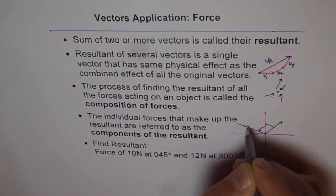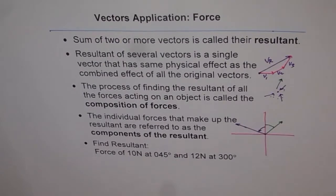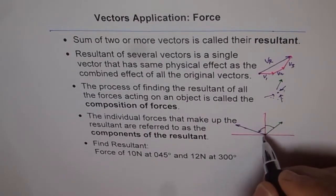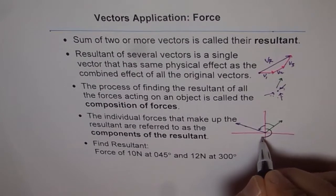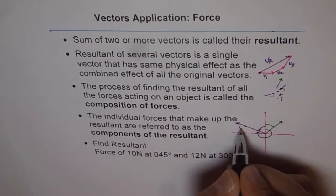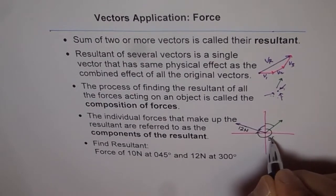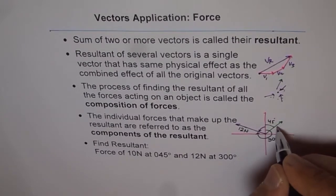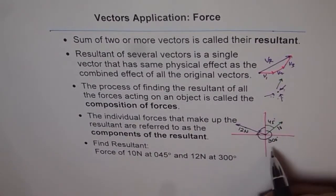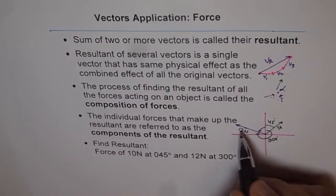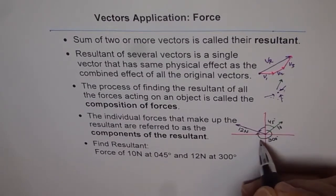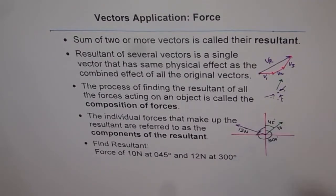So we draw 12 newtons at 300 degrees and 10 newtons at 45 degrees. Between the two forces we have an angle. We can apply the triangular law or use a parallelogram — all these methods give us the resultant. Let us find the resultant of these two forces using the geometric method: draw a parallelogram with a force parallel to 12 newtons from the tip of 10 newtons.